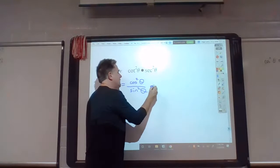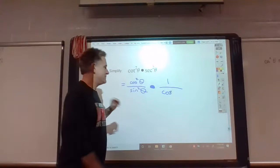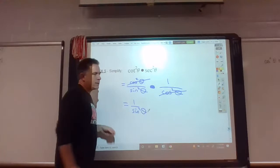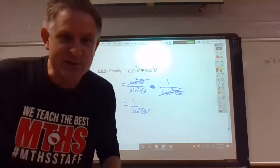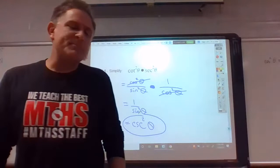Secant squared. Secant is the reciprocal of cosine, two of them. So very simple. What's going to happen next? And just to finish, what is the reciprocal of sine? You're saying it with me right now. It's cosecant, two of them. And so there we have it. We have simplified this problem to cosecant squared.